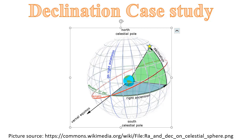Declination is like latitude in equatorial coordinates. So once again: right ascension is longitude in equatorial coordinates, and declination is latitude. I will show you how to check this information - there are many sources, this is just basic astronomy. Now I will show you how to use declination in timing solution software to build forecasting models.